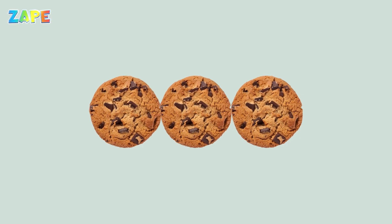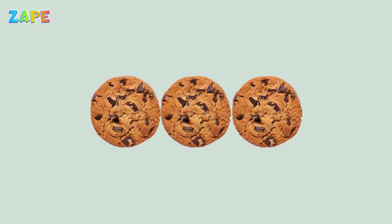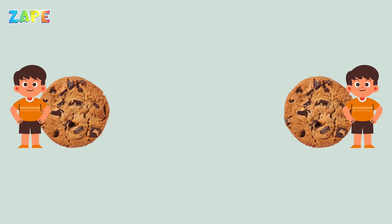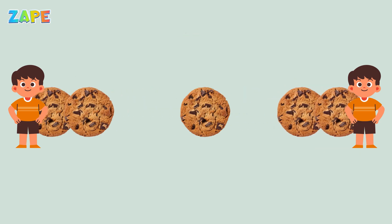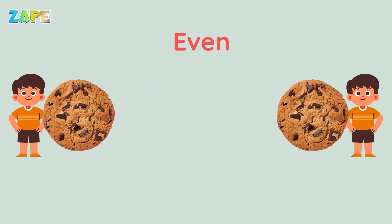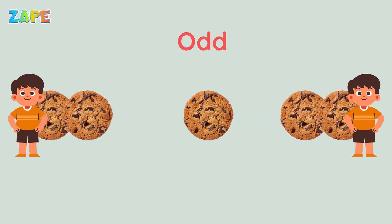Imagine you have some yummy cookies. If you can share your cookies equally between two friends, that's an even number. But if one cookie is left out, oh no, that's an odd number. Even numbers like to share fairly. Odd numbers don't mind if one stays out — they're a little silly.